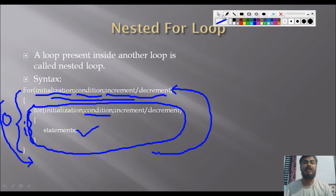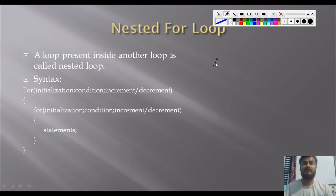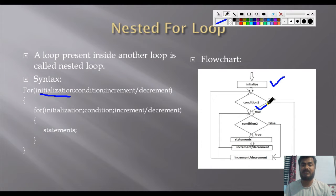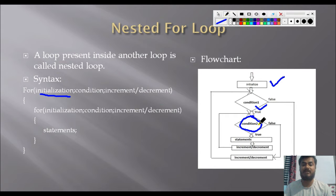Now let us try to understand this using a flowchart. In the flowchart, initialization takes place first — we give the initial value. Then we check the first condition, which is the outer loop's condition. If this outer loop's condition is true, then it goes for checking the inner loop's condition. Condition one is the outer loop's condition and condition two is the inner loop's condition.